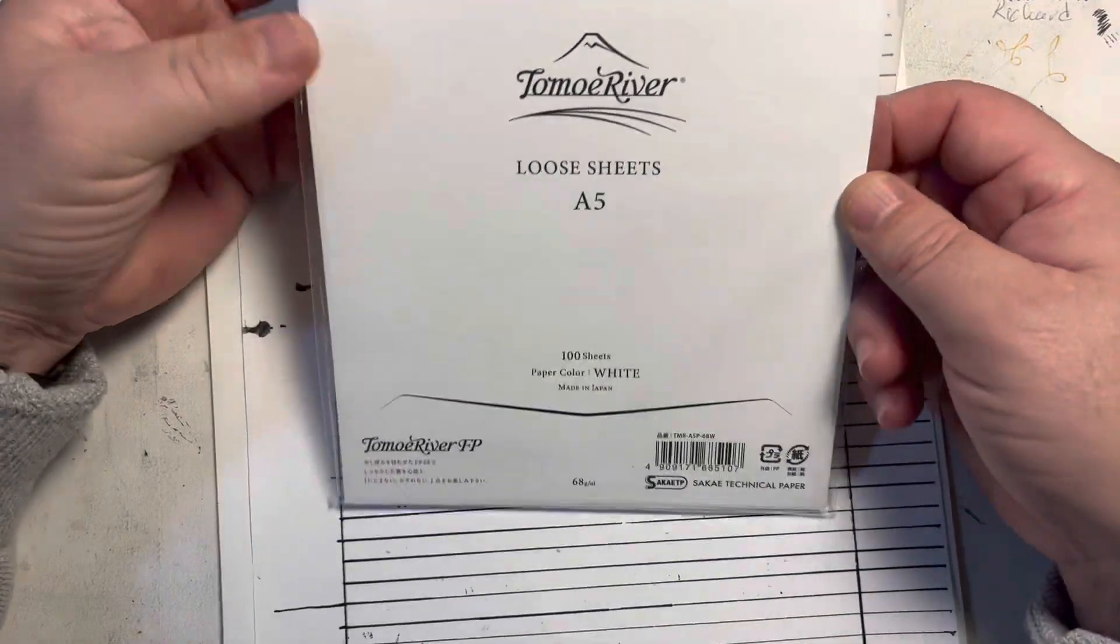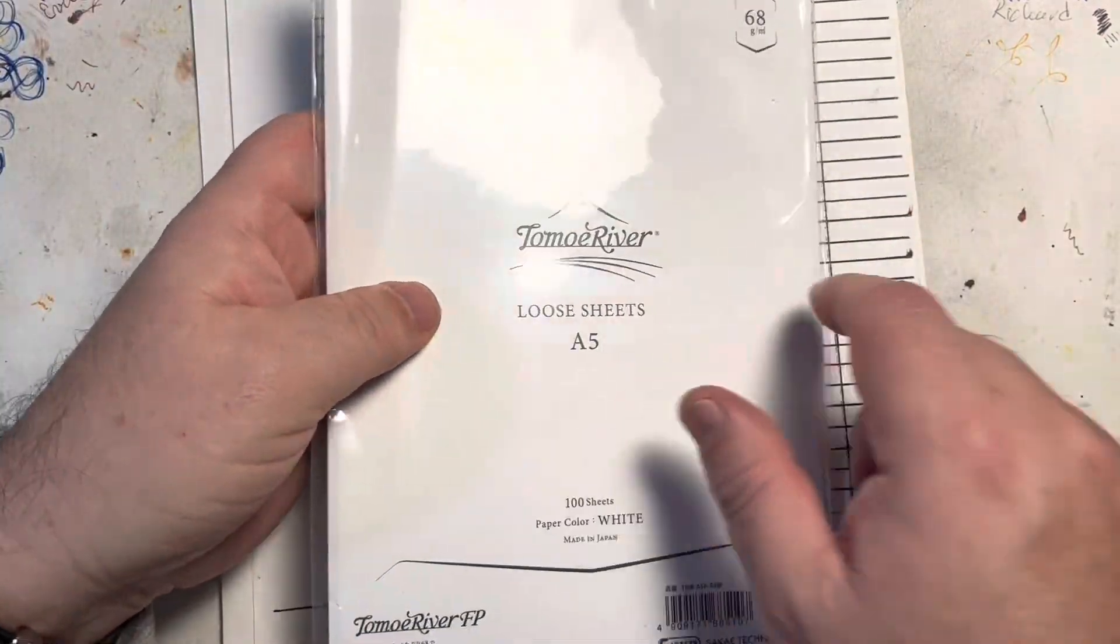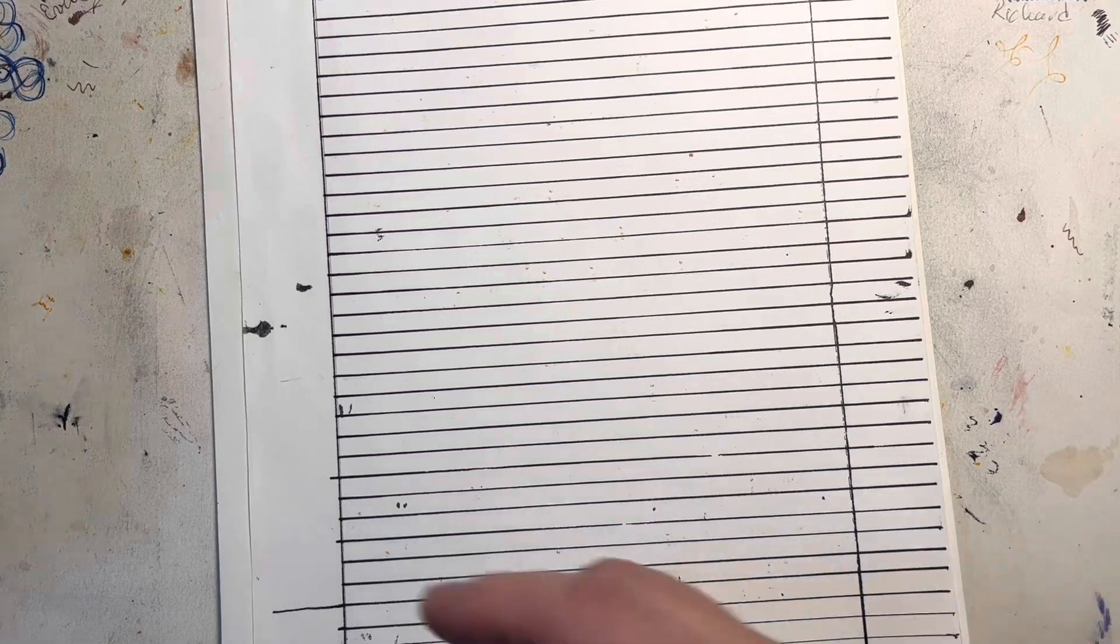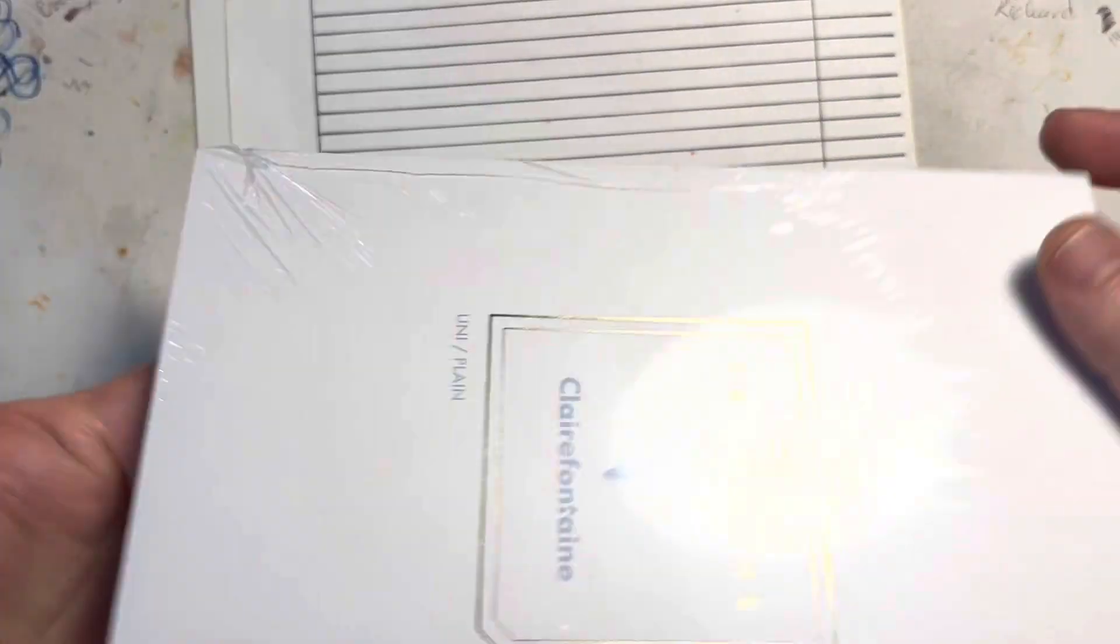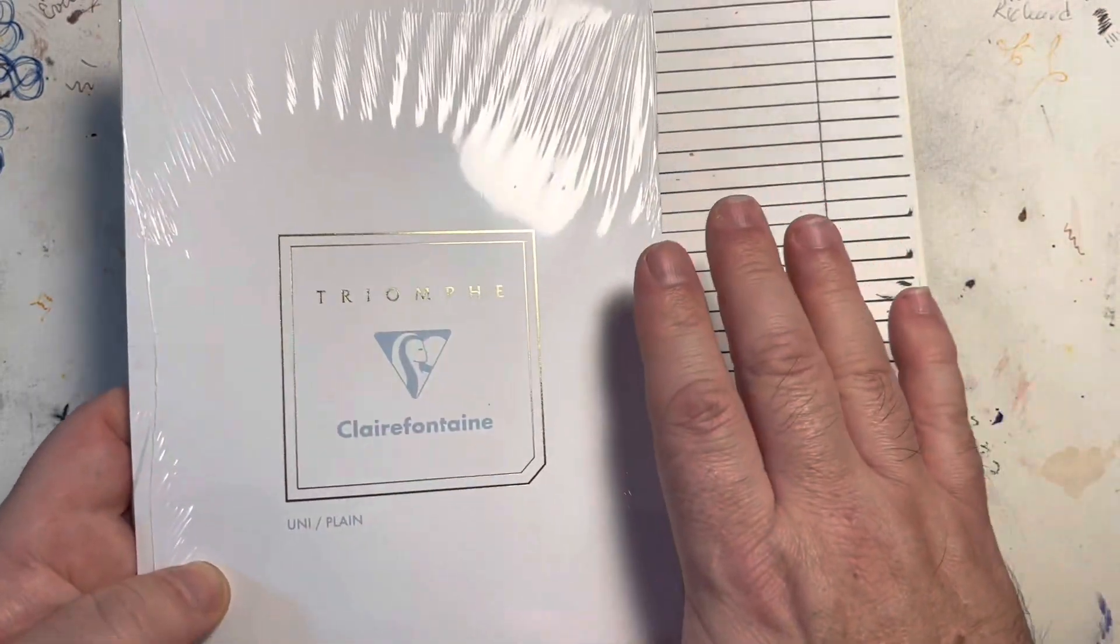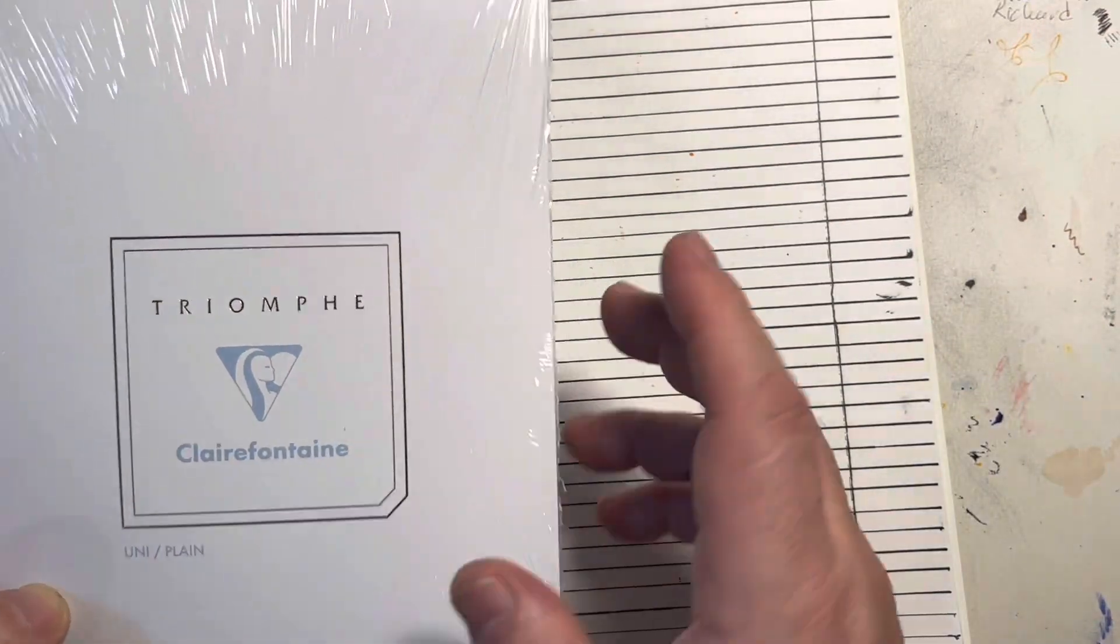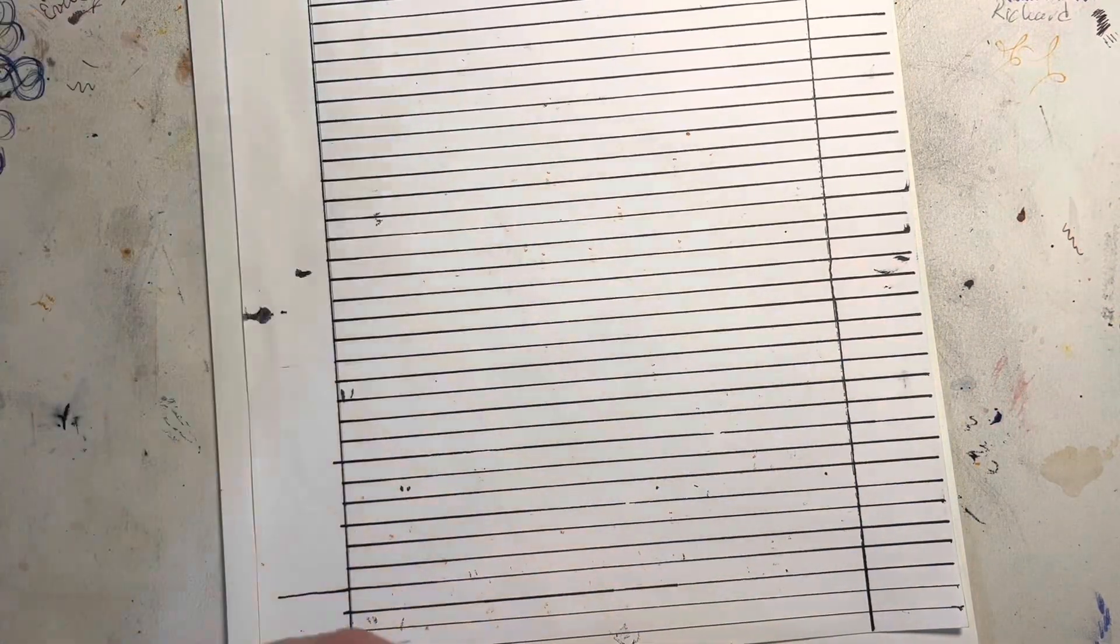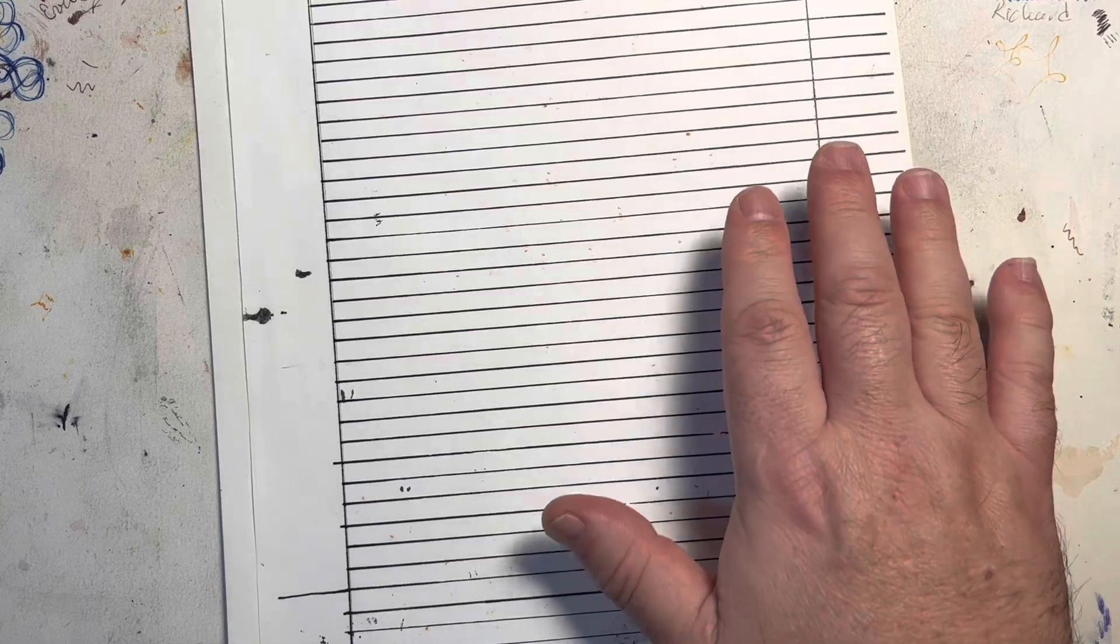When I want to write a shorter letter, I use the A5 paper. This is typically what I use to correspond with, again, Tomoe River. And I do have some Clairefontaine. I have A4 and A5 Clairefontaine paper as well. It's a little heavier, very smooth, wonderful-feeling paper, thicker. So I can't really see my line guide through it, but it's a great paper.